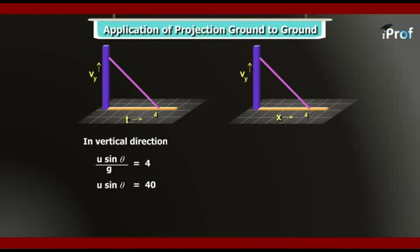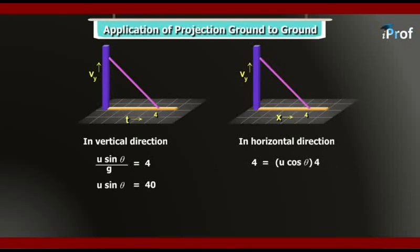That gives us u·sinθ = 4g. Taking g = 10 m/s², u·sinθ = 40. In the horizontal direction, we write x = u·cosθ · t, so 4 = u·cosθ × 4, giving u·cosθ = 1. Therefore, the horizontal and vertical components of velocity at t = 0 are 1 m/s and 40 m/s respectively.